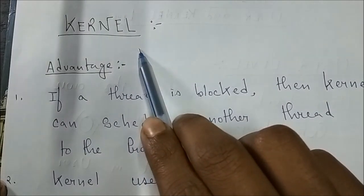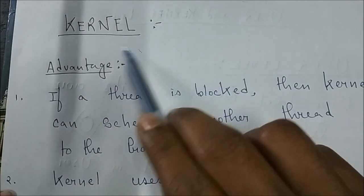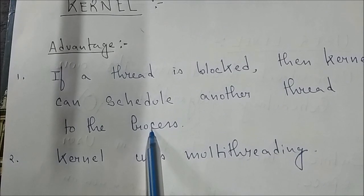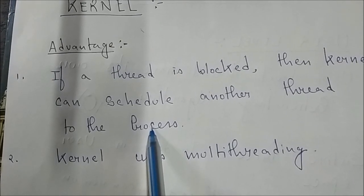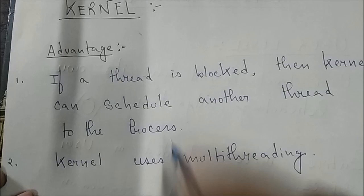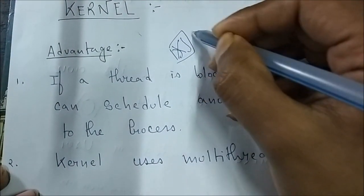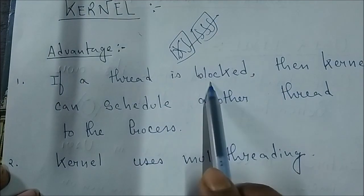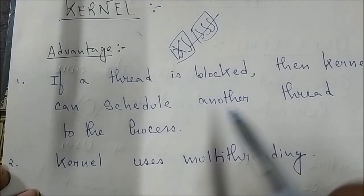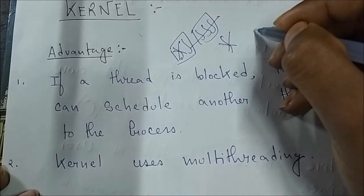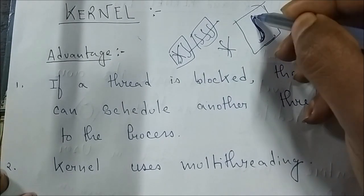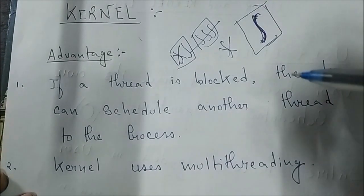Now we will see kernel level thread. The advantage of kernel level thread is: if a thread is blocked, then the kernel can schedule another thread to the process. In user level, if a thread is blocked, all threads within the process are blocked. But in kernel level, if a thread is blocked, the kernel will schedule another thread to the process. This means it is more powerful and better than user level thread.